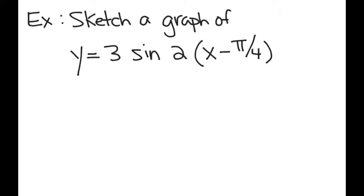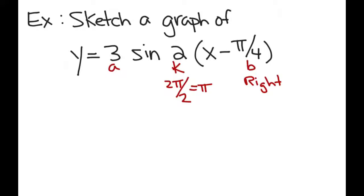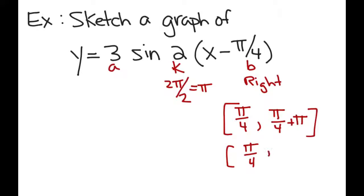Let's put all of these things together now and try to draw a decent sketch of y equals 3 sine of (2x minus π/4). Let's look at all the different components. We have our amplitude, which is 3, so the graph is going to go up to 3 and down to negative 3. The period is going to be 2π over k, which is going to be 1π. b is π/4, and because of the minus sign, this graph is going to get shifted to the right by π/4. So a good interval is going to be from π/4 to 5π/4.